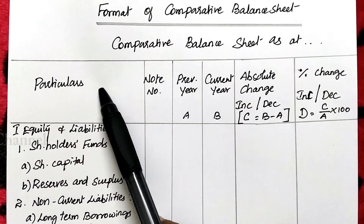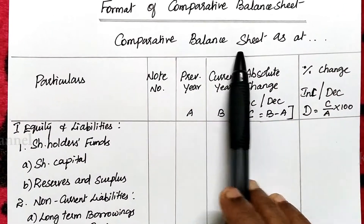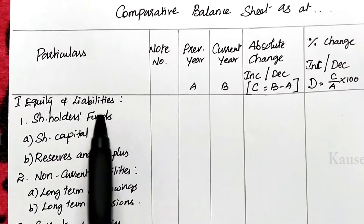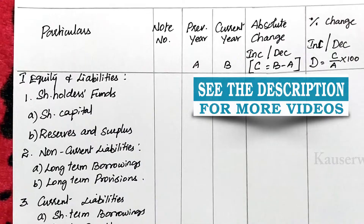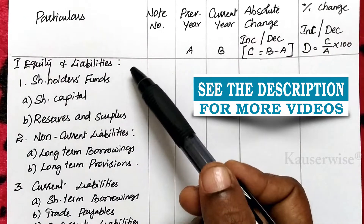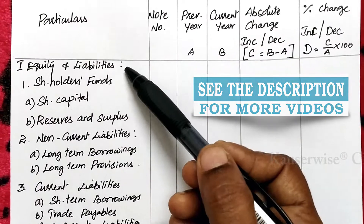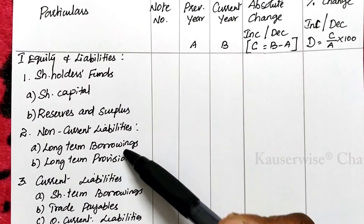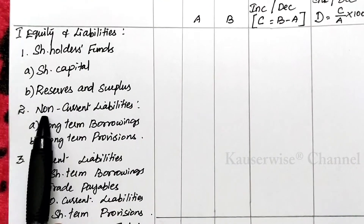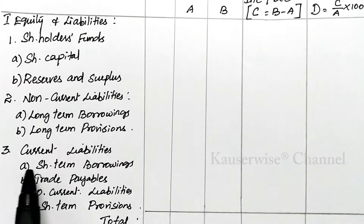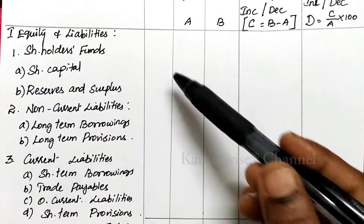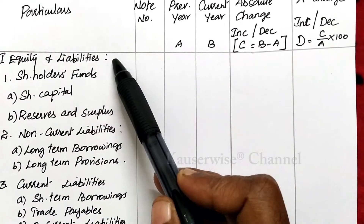Under particulars, the first part is equity and liabilities. We know the format of preparing balance sheet according to the revised schedule. First we need to enter equity and liabilities — under that, three components are there: first, shareholders fund; second, non-current liabilities; and third, current liabilities.